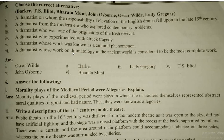Question 6: Answer the following. Morality plays of the medieval period were allegories. Answer: Morality plays of the medieval period were plays in which the characters themselves represented abstract moral qualities of good and bad nature; thus they were known as allegories. Write a description of 16th century public theater: The 16th century public theater was different from the modern theater — it was open to the sky, did not have artificial lighting, the stage was a raised platform with the aisles at the back supported by pillars, there was no curtain, the main platform accommodated audience on three sides, and the entire theater was surrounded by galleries.